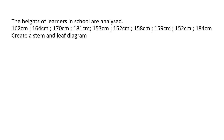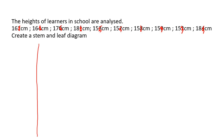Now here comes the stem and leaf diagram. A stem and leaf — you've maybe seen it before but didn't know what it was. It has a vertical line going down like this. What you do is ignore the last digit of each number. Take the remaining numbers and arrange them from smallest to largest. So that's going to be 15, then 16, then 17, then 18.